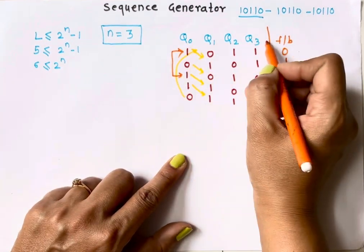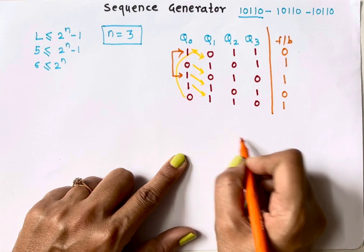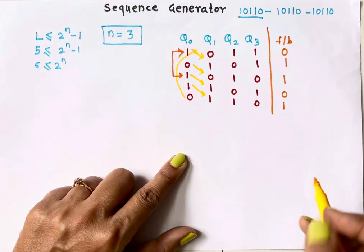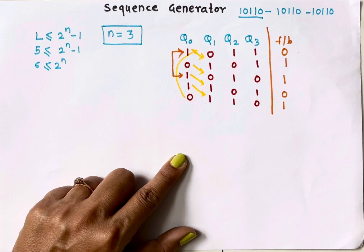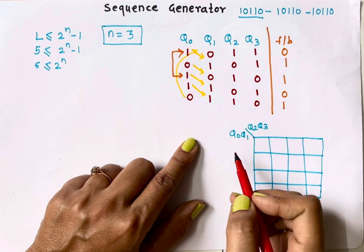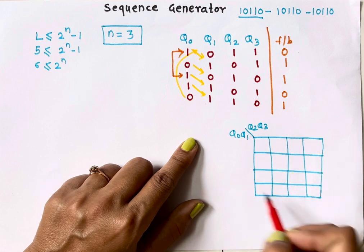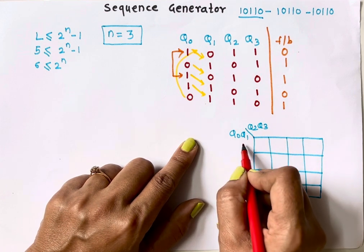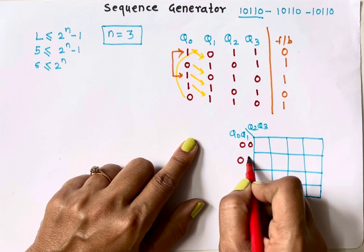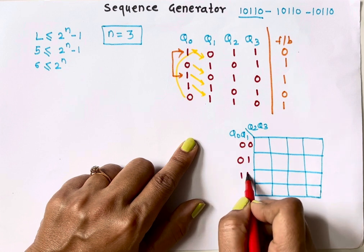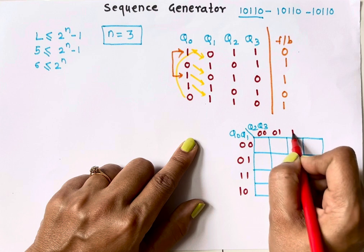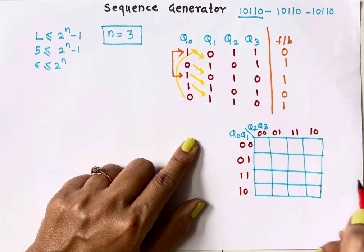Since the total number of flip-flops is 4, I will use a K-map with 16 cells — a K-map for 4 variables Q0, Q1, Q2, Q3. The values along the axes follow Grey code: 00, 01, 11, 10.